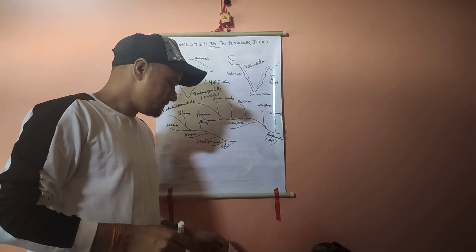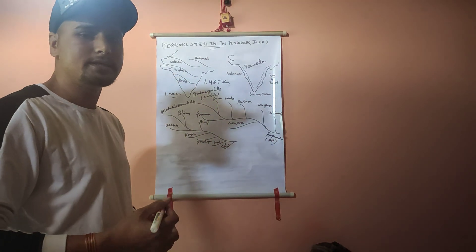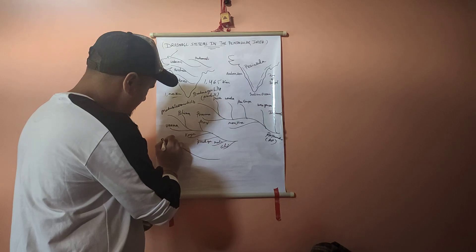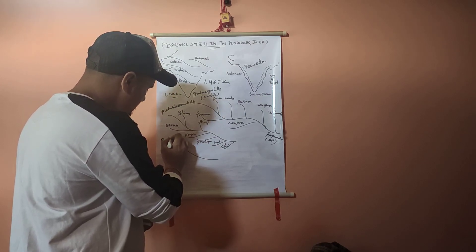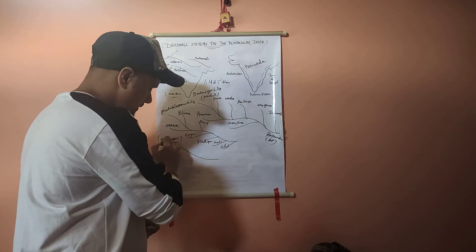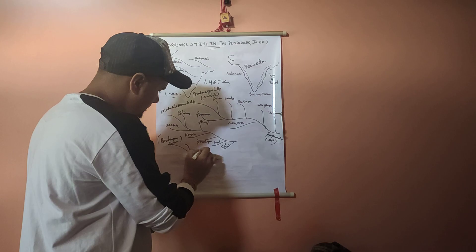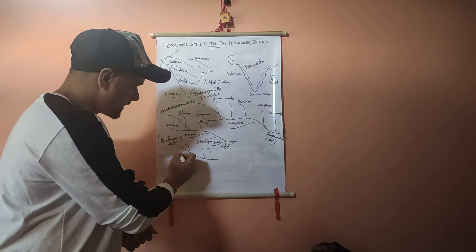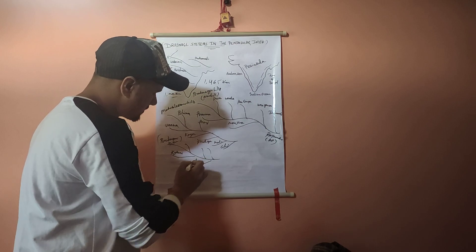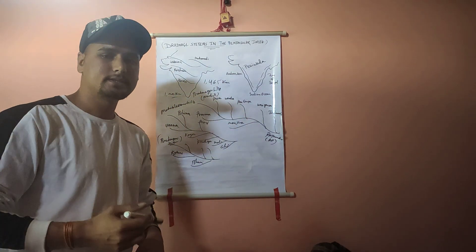The next major river is the Kaveri River, which is known as the 'Ganga of the South.' The Kaveri originates from the Brahmagiri Hills in Karnataka. Its left bank tributaries include Hemavati, Shimsha, and Arkavathi, while the right bank tributaries are Kabini and Bhavani. The Kaveri mainly flows through the states of Karnataka and Tamil Nadu.